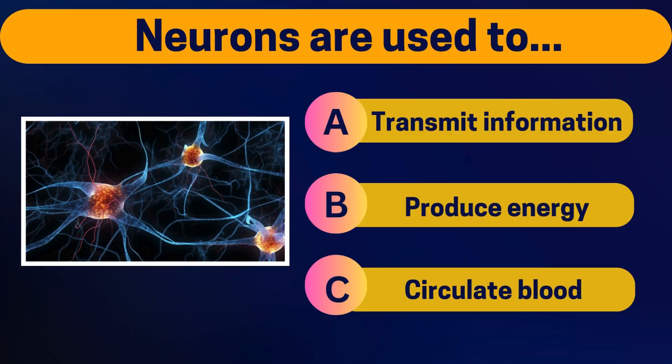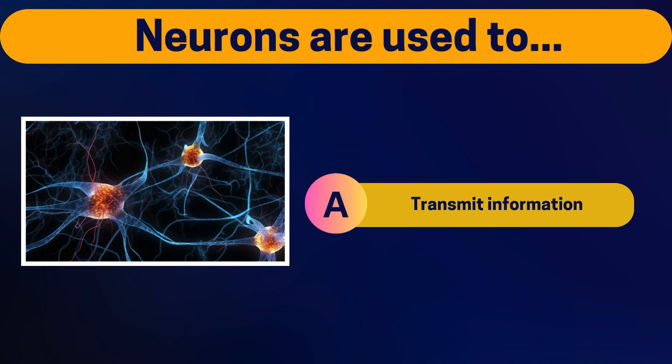Neurons are used to transmit information, reduce energy, or circulate blood? Transmit information. Incredible.